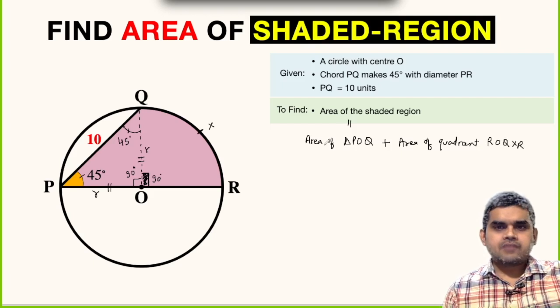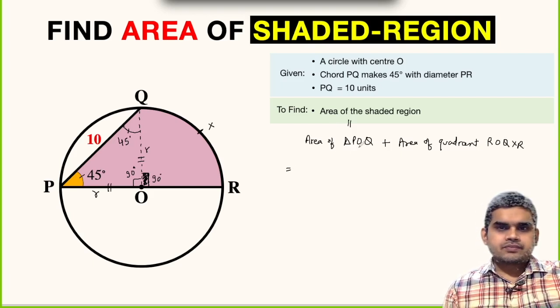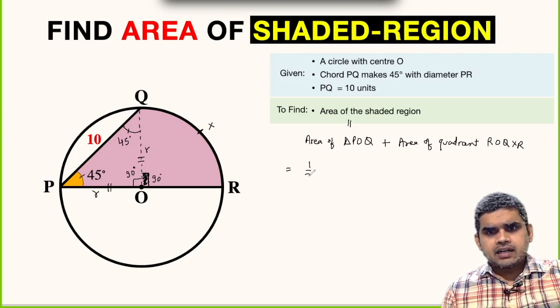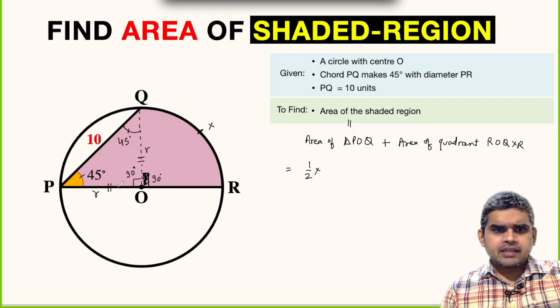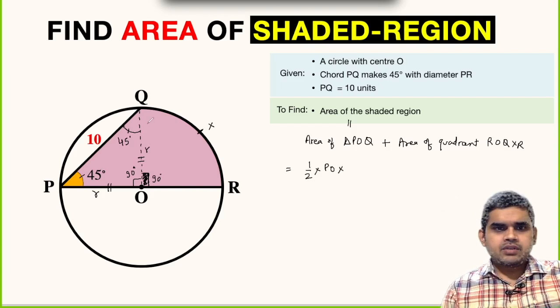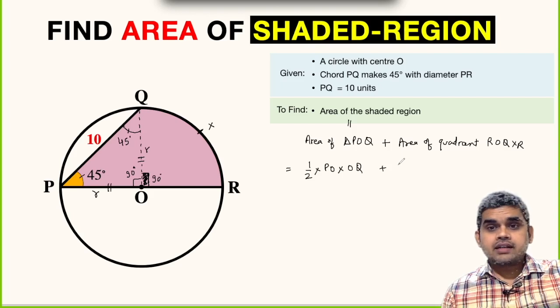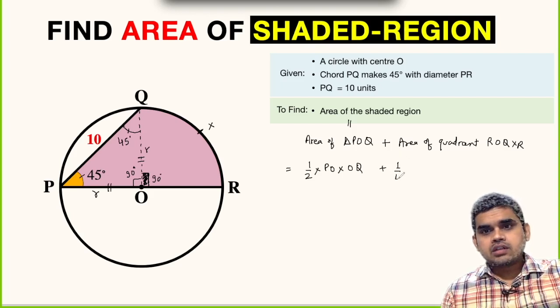Area of triangle POQ – this is a right angle triangle – so this will be half times base, I am taking PO as base, times the altitude OQ, plus area of quadrant is one-fourth of a circle, that means 1/4 times π times R².